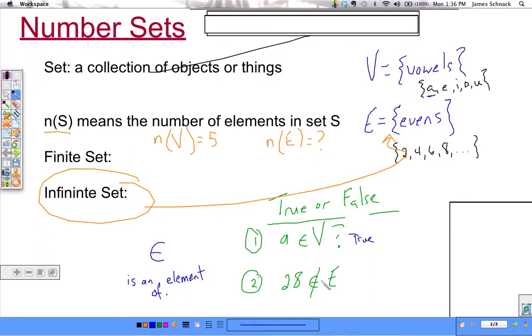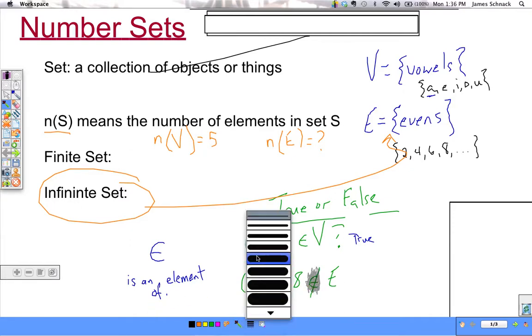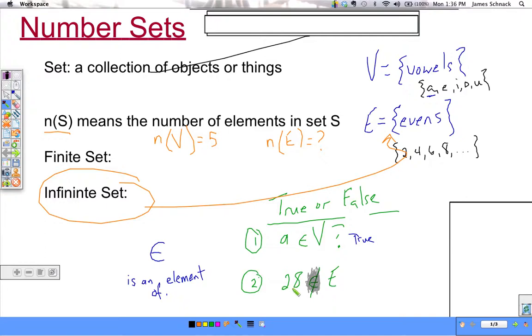Take a look at number two. Take a guess as to what this symbol right here is. It means not an element of. 28 is not an element of E. So, is 28 in this group, is it even? Yeah, it is an element. So, for number two, this is false.